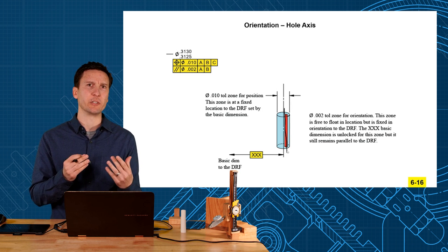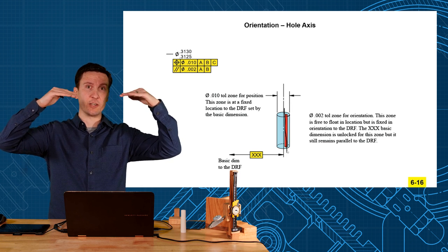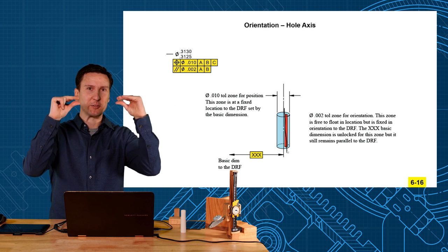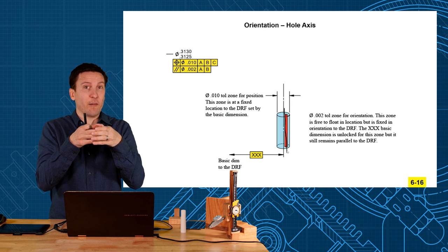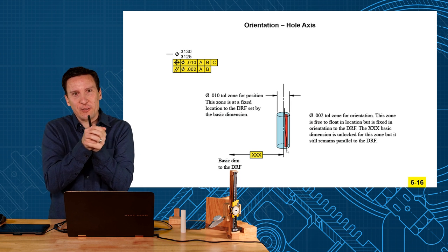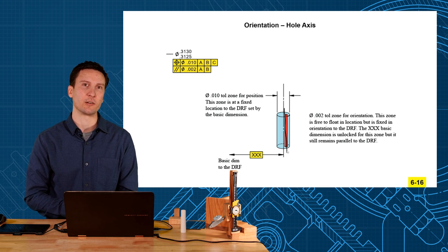This is very similar to what we did with surfaces. We have a big profile tolerance to locate where the surface is and we have a smaller parallelism zone that floats inside. But now it's just going to be a cylindrical zone, a position, and then you have a smaller cylinder that floats inside. So showing that orientation is a refinement of your location tolerance.